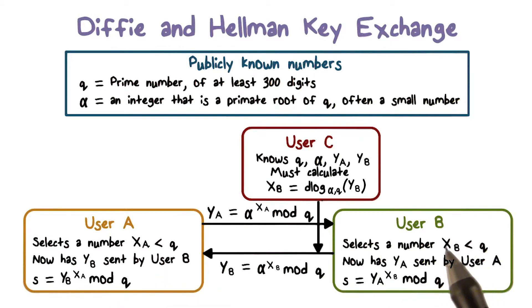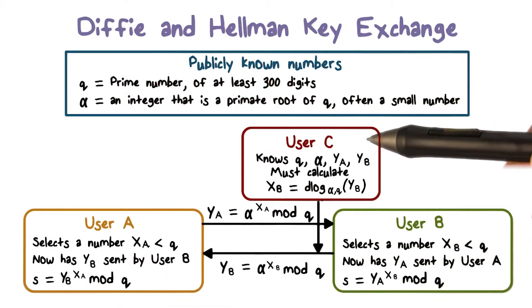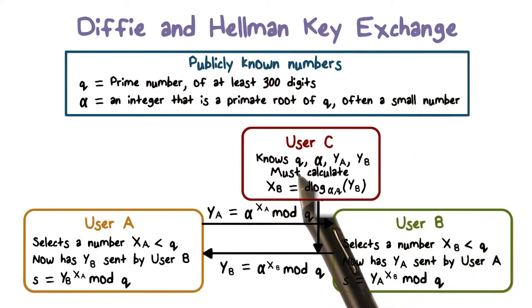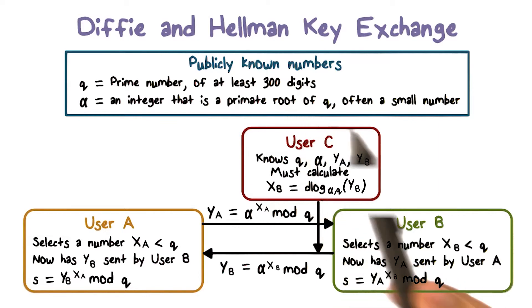Furthermore, xa and xb are private. And an adversary, such as user C, only knows q and alpha, which are public, and ya and yb, which are transmitted and are also public.